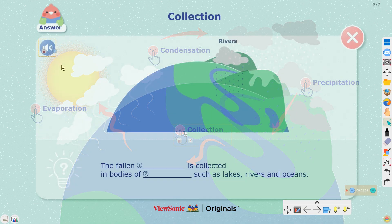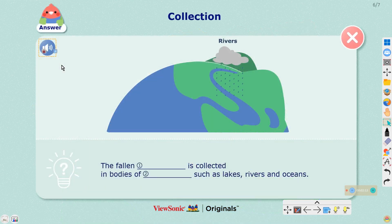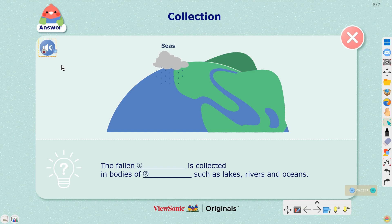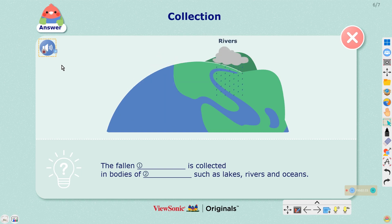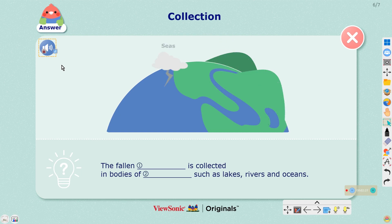The fallen precipitation is then collected in bodies of water, including seas, oceans, rivers, and lakes. Water on land then evaporates, and the amazing water cycle continues.